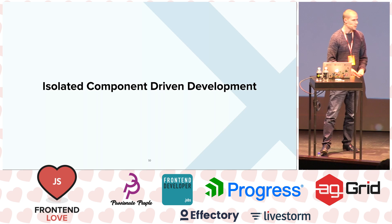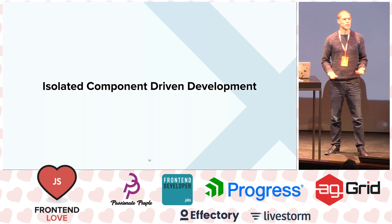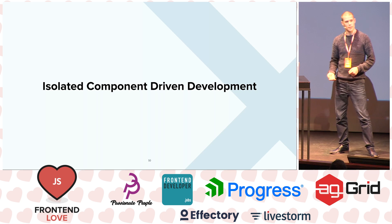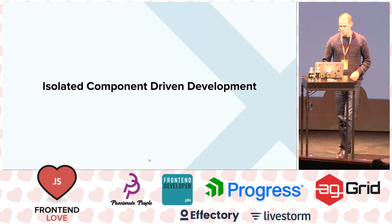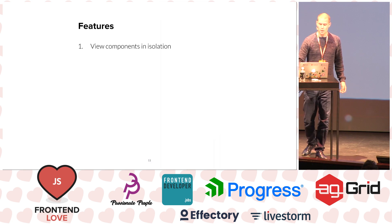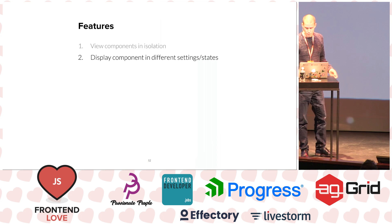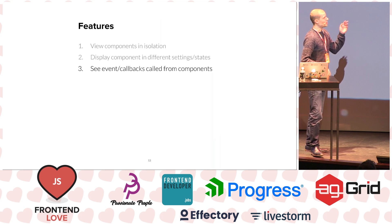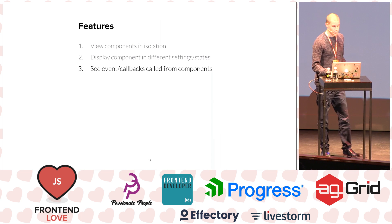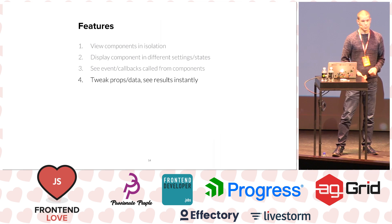This process I usually call isolated component-driven development, where you create your components — like your tab component, your carousel component — out of context of the rest of your application. Features of such a system would be viewing components in isolation, maybe displaying them with different data coming in and different props for React, and being able to see which functions are being called when you do certain things like clicking and dragging.